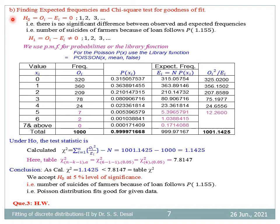H₀ is O_i − E_i = 0 and H₁ is O_i − E_i ≠ 0. To obtain probabilities, we use the probability mass function P(x) = e^(−λ) · λ^x / x! for lambda = 1.155. Alternatively, you may use the Excel function POISSON(x, mean, FALSE). Using these probabilities, the sum is 0.9999. These are the expected frequencies, and these are the ratios O_i²/E_i. We apply the concept of pooling of data, and after pooling there are 6 frequencies.